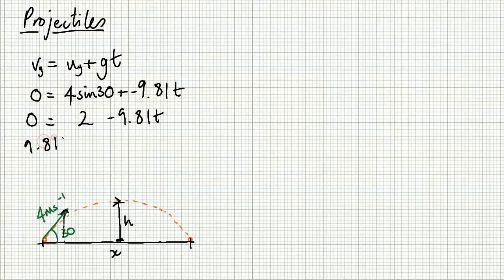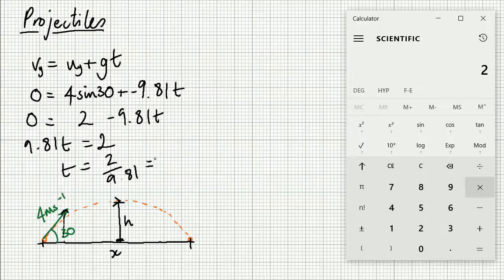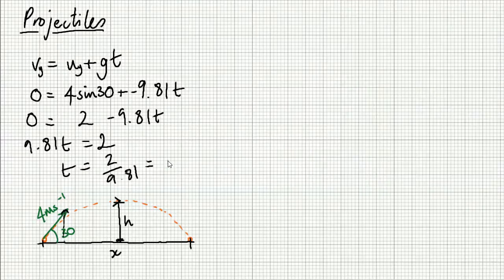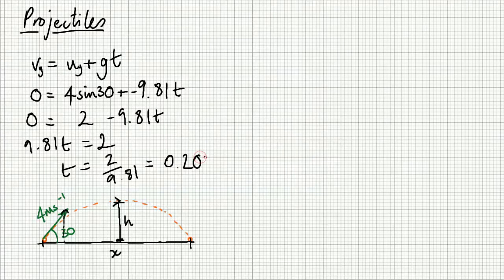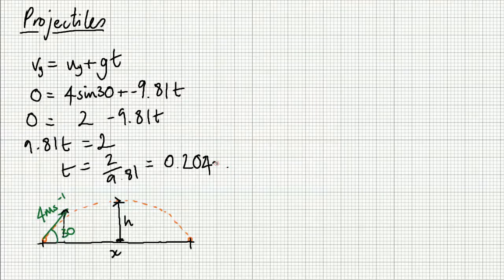Rearranging: 9.81T equals 2, so T equals 2 over 9.81, which gives approximately 0.204 seconds. Now that's not the time of flight — that's the time to the top of the parabola.